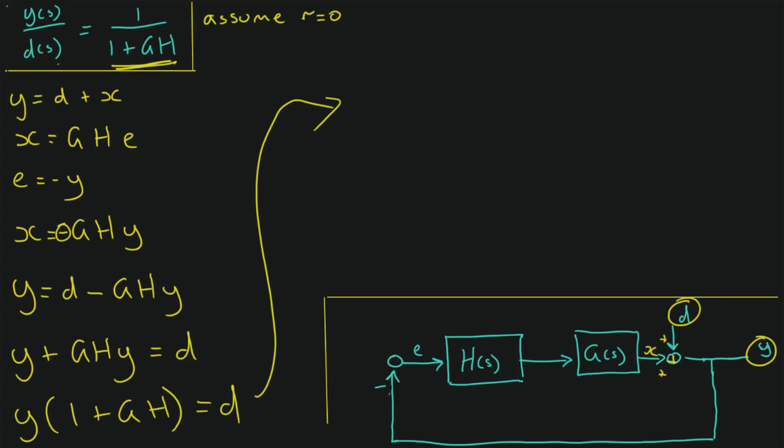And then we divide both sides. And we have Y is equal to D over (1 plus GH). And if we divide both sides by D, we see we get 1 over (1 plus GH), which is exactly what we were looking for.